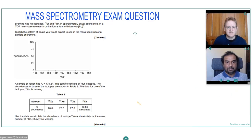Okay, so today we're going to have a look at a mass spectrometry exam question. Bromine has two isotopes, bromine 79 and bromine 81 in equal abundance. And in a mass spectrometer, bromine forms ions with the formula Br2+. Sketch the patterns of peaks you would expect to see in the mass spectrum of a sample of bromine.